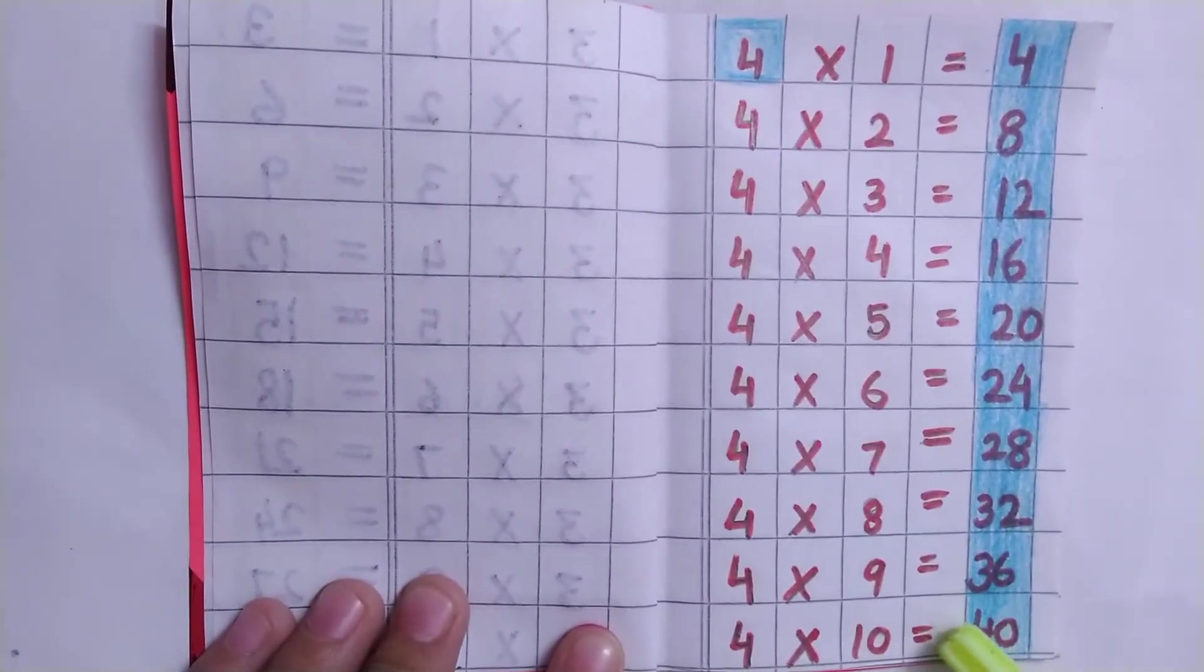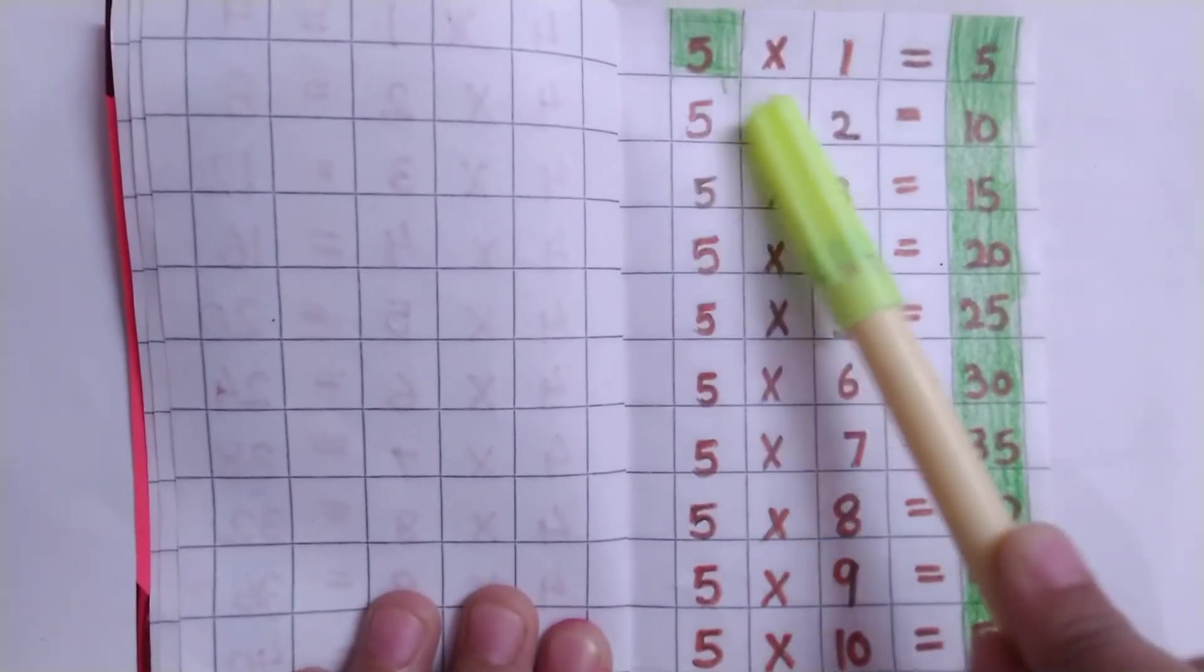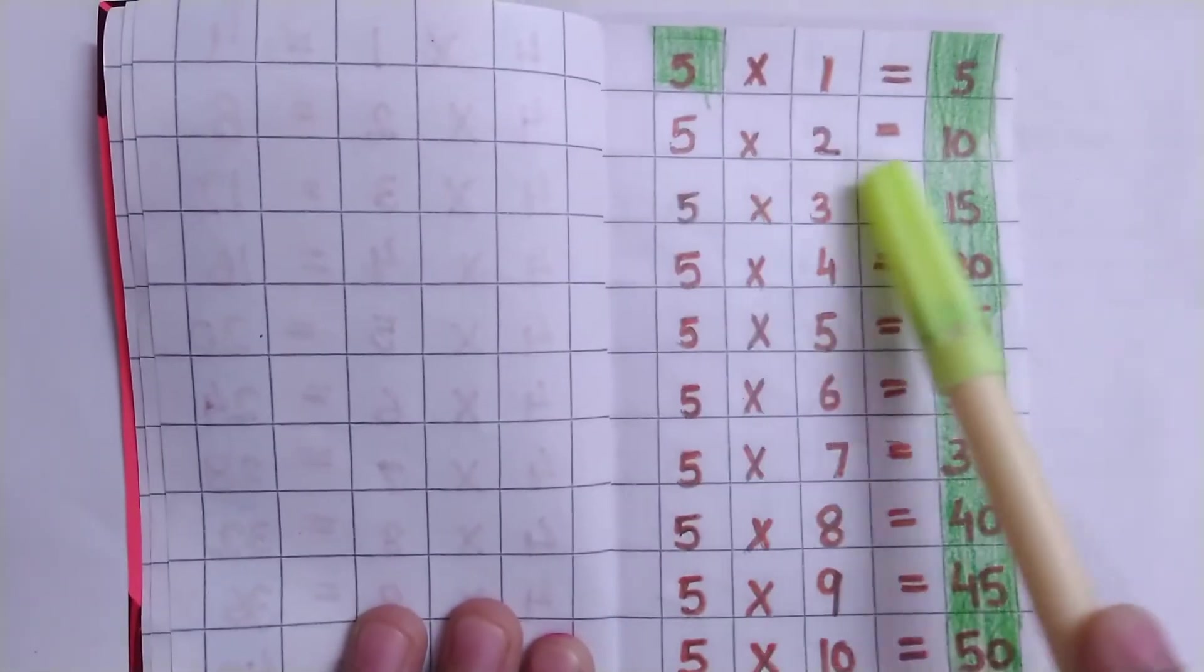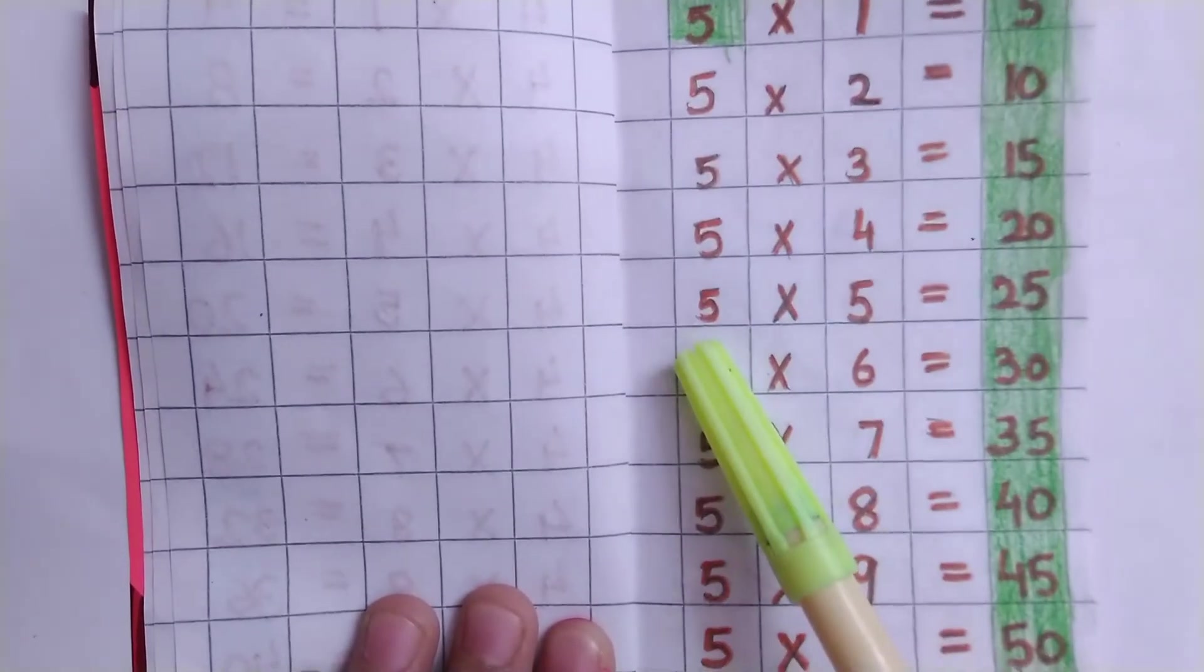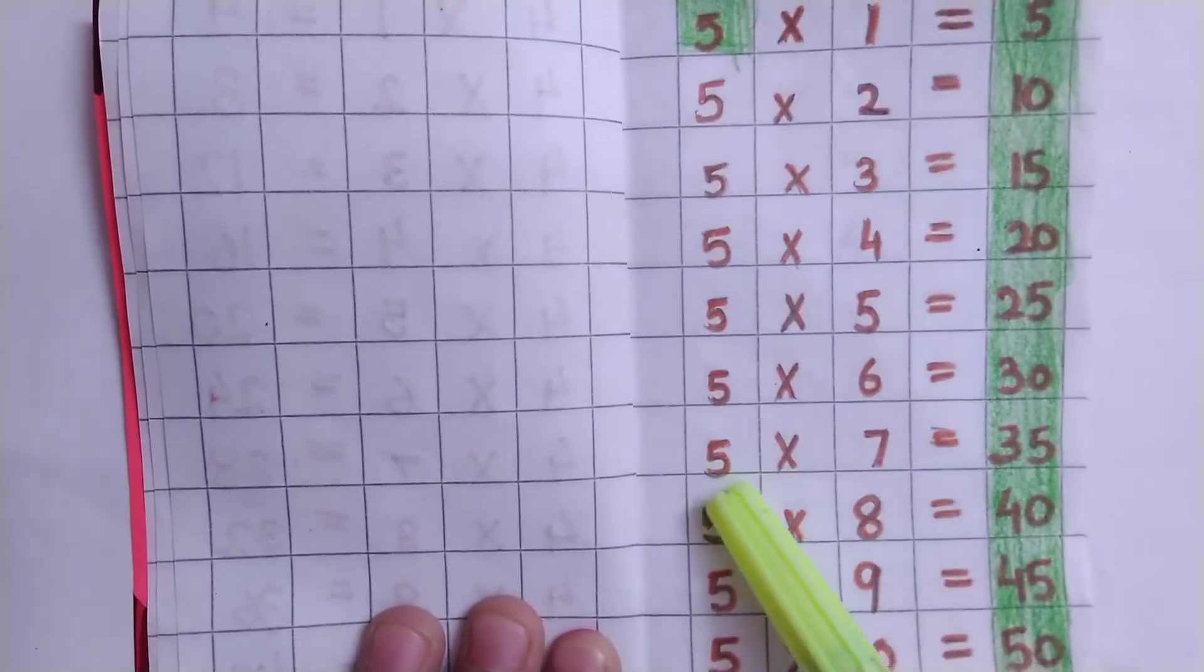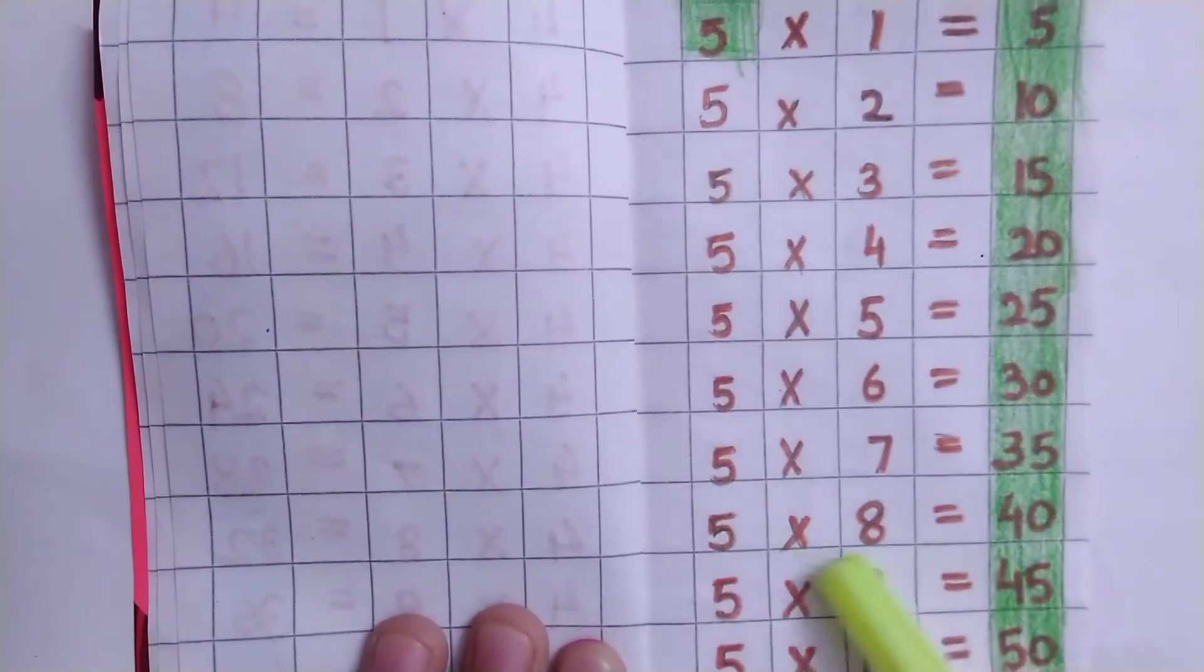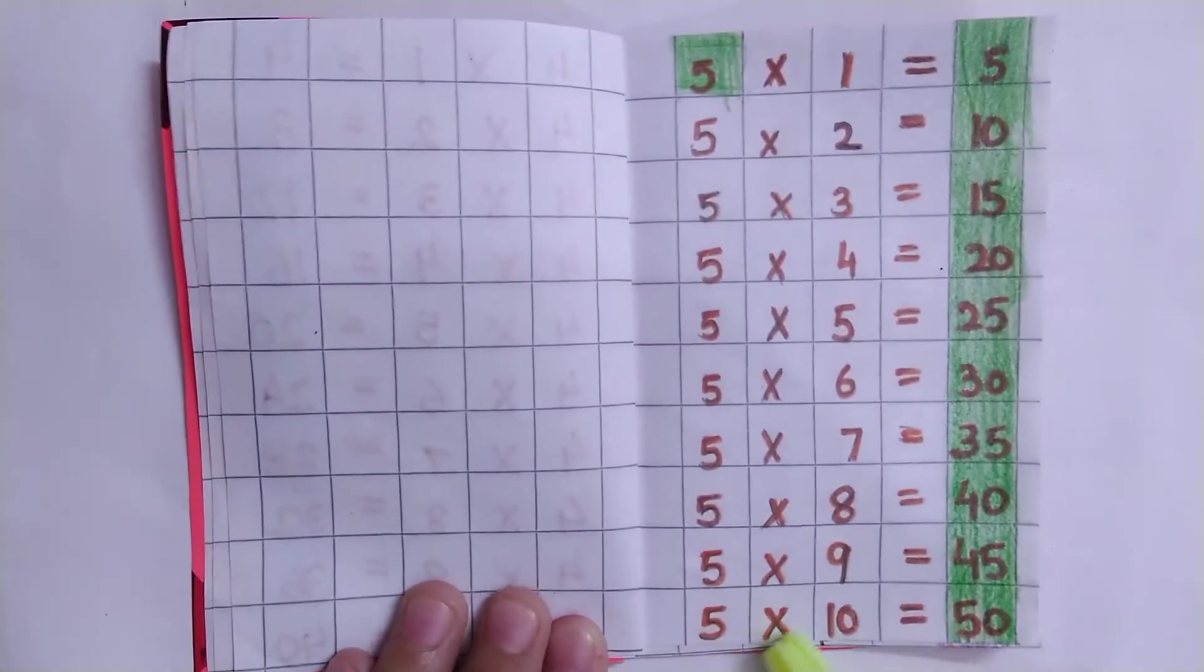Table of 5: 5×1=5, 5×2=10, 5×3=15, 5×4=20, 5×5=25, 5×6=30, 5×7=35, 5×8=40, 5×9=45, 5×10=50.